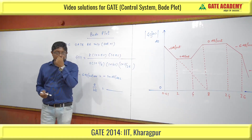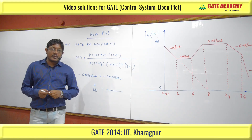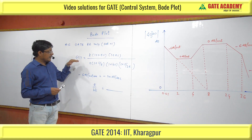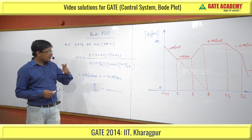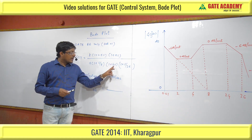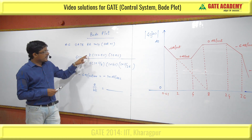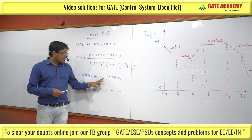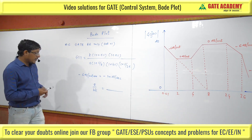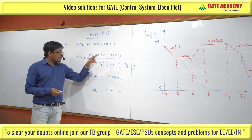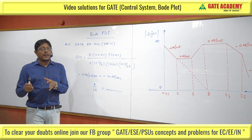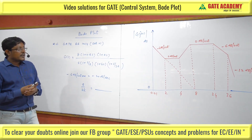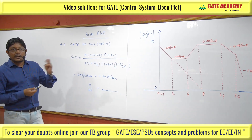This is Gate Electrical 2014, Set 1. In this question, you have a transfer function with three unknowns: K (the gain), A, and B. A upon BK is to be found out, and it was a numerical data type question. From the Bode magnitude plot of G(S), you have to determine all three values A, B, and K.